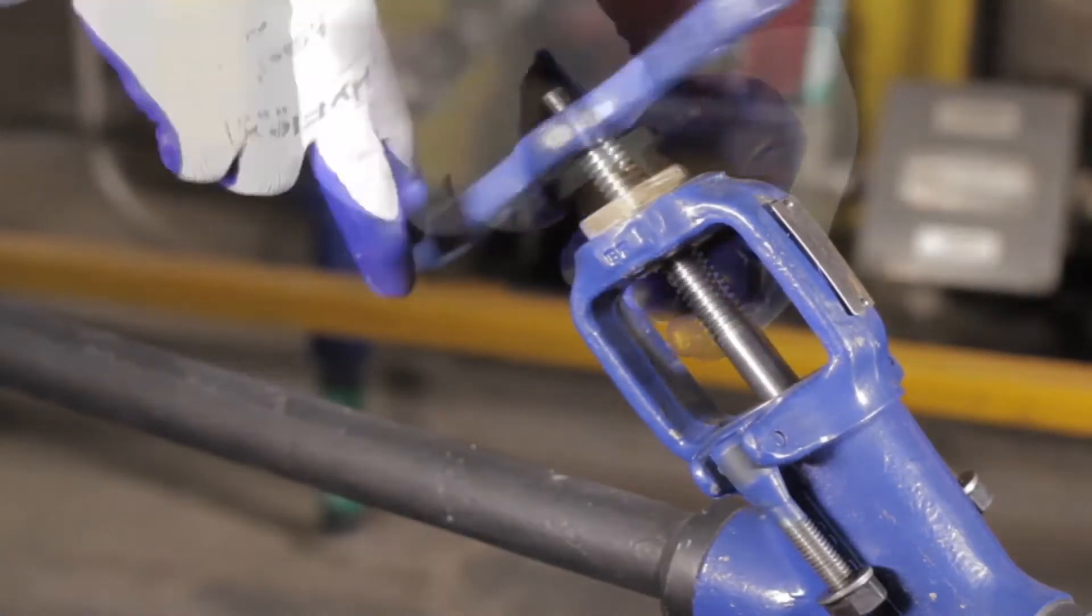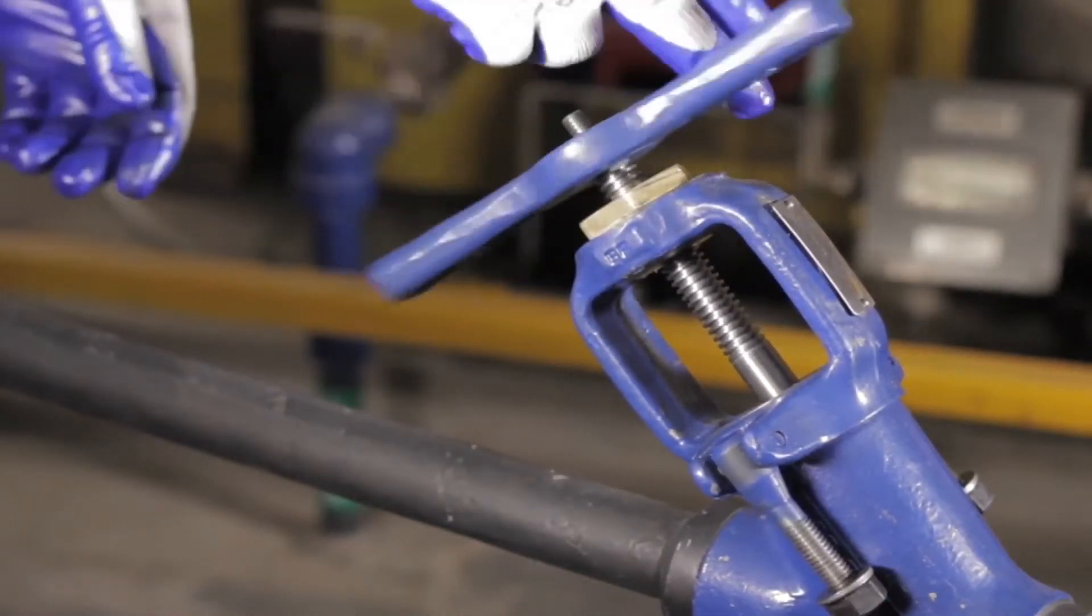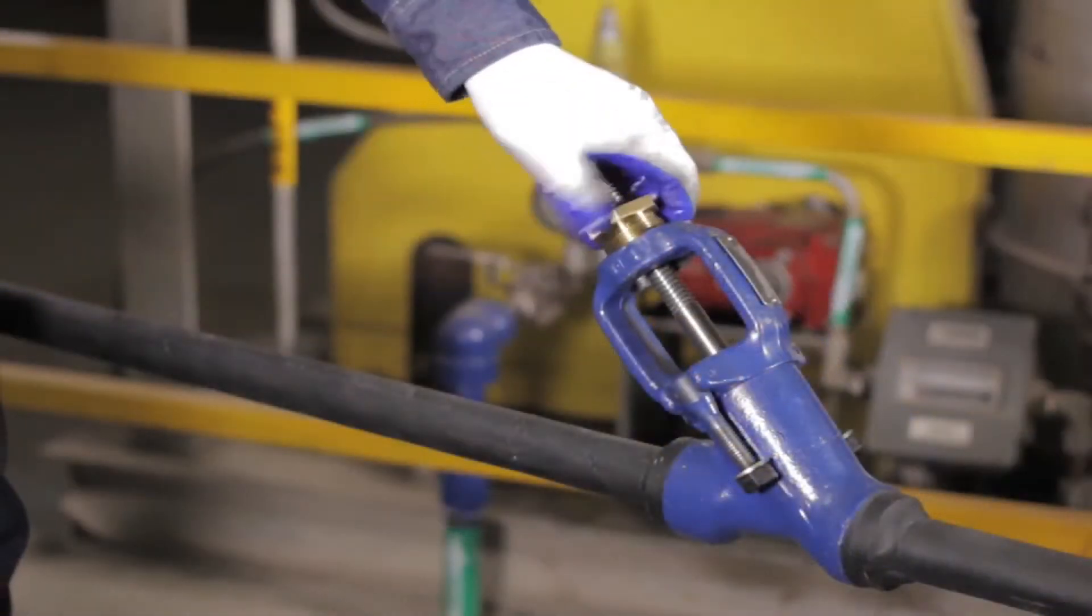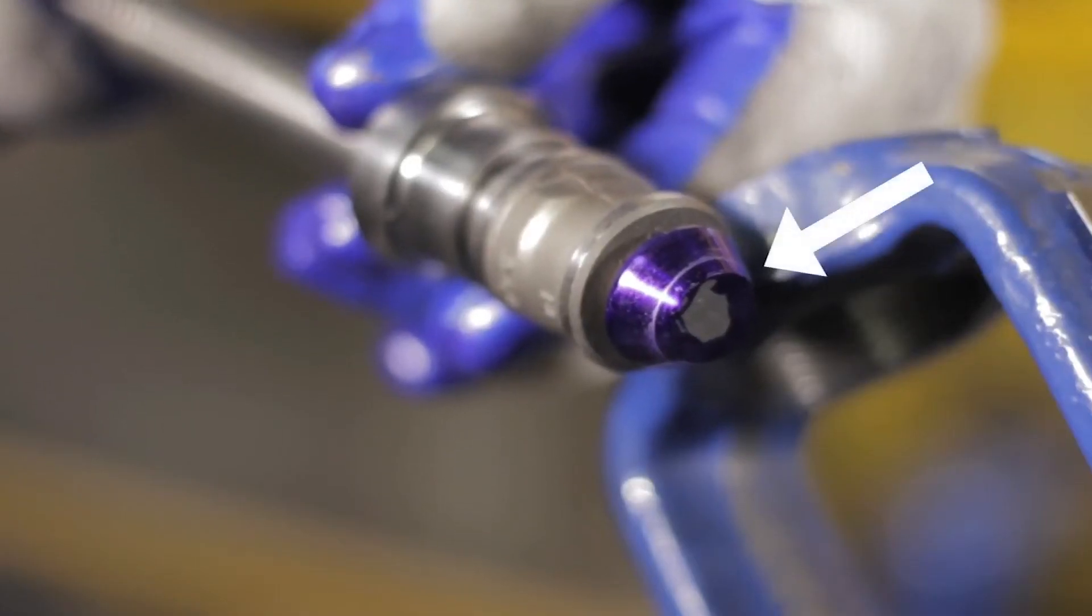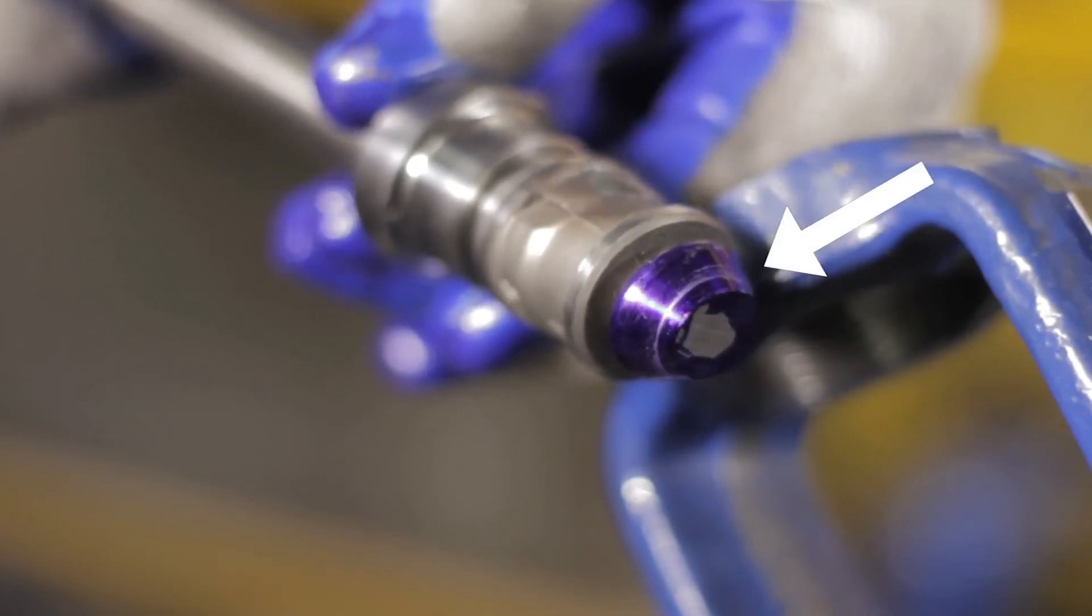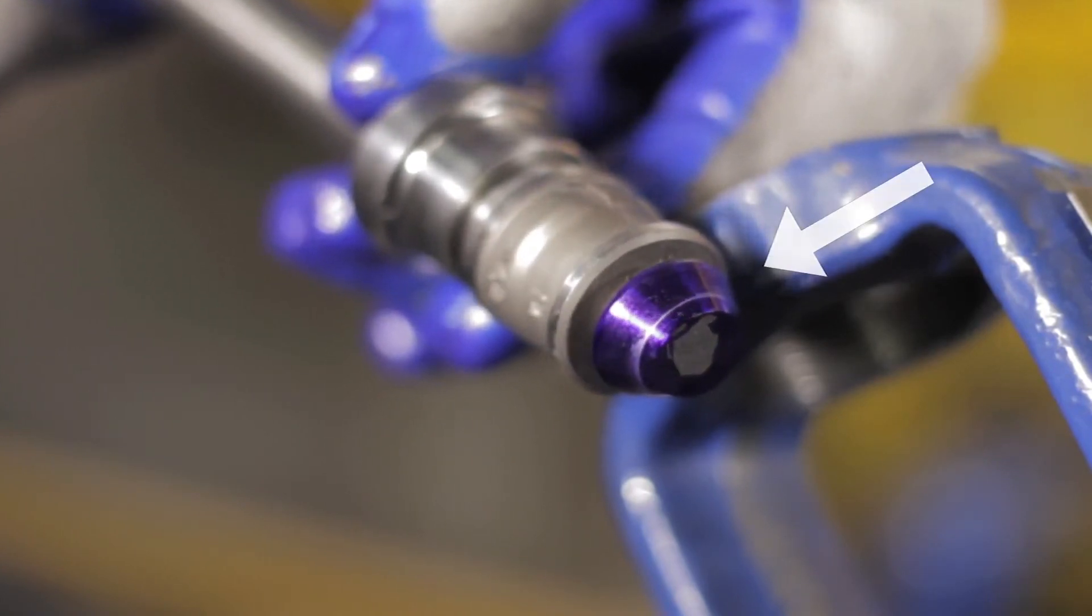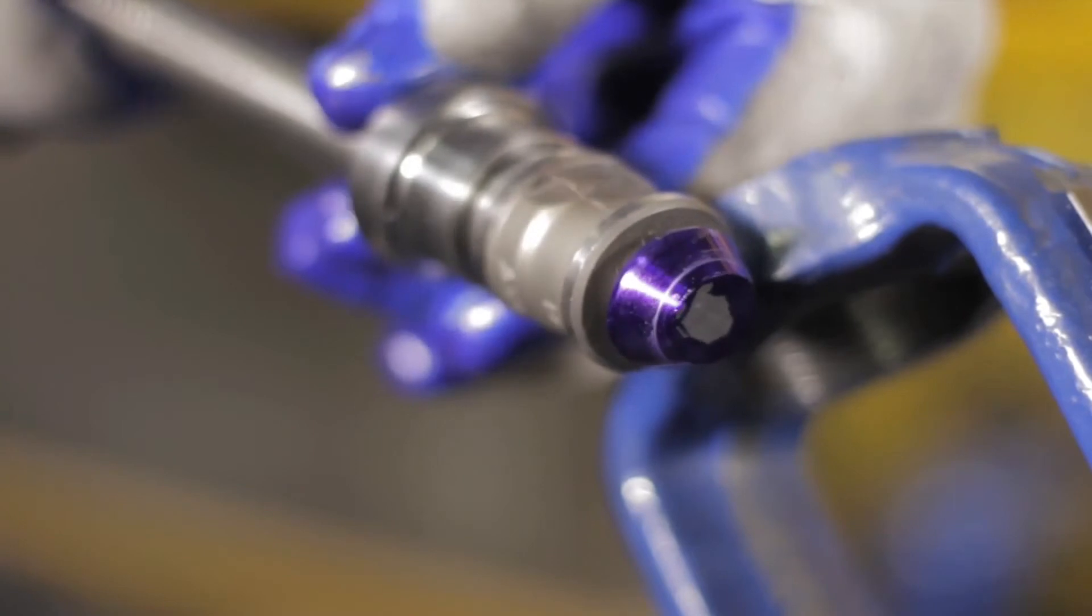Insert the stem disc assembly into the valve and screw in the yoke bushing for alignment. Close the valve tightly as if you were reassembling it. Then unscrew the stem and remove the yoke bushing. A continuous line will ridge around the face of the disc, showing that a perfect seating surface has been cut.